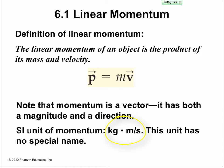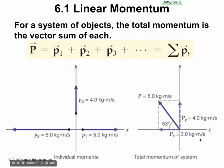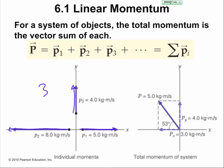The unit for momentum is kilogram meters per second — there's no fancy name, we don't have a special momentum unit. For a system of objects, the total momentum is the sum of each one. In my diagram here, I have three objects, each with momentum in different directions, and the sum of all the vectors gives you a resultant vector of the total momentum.